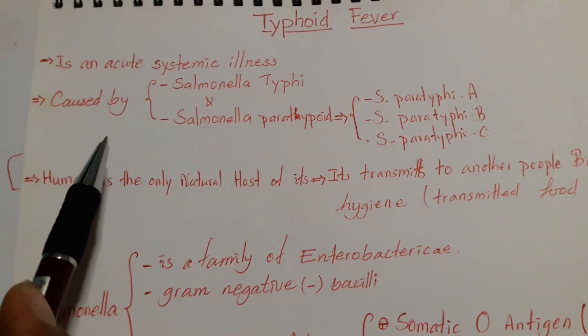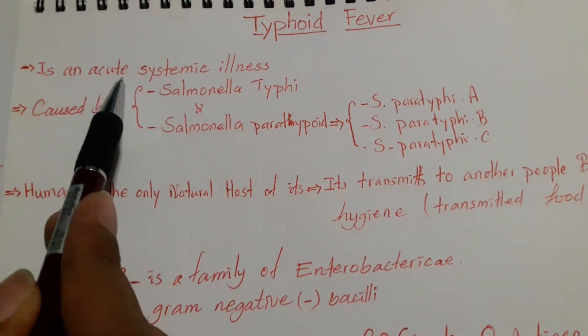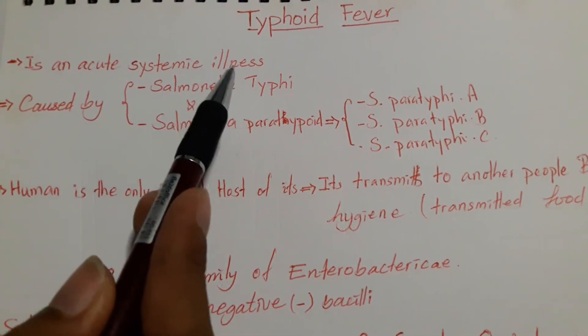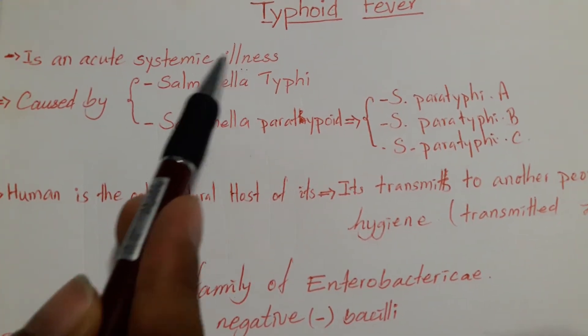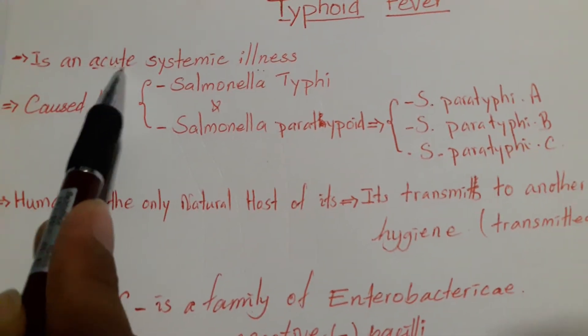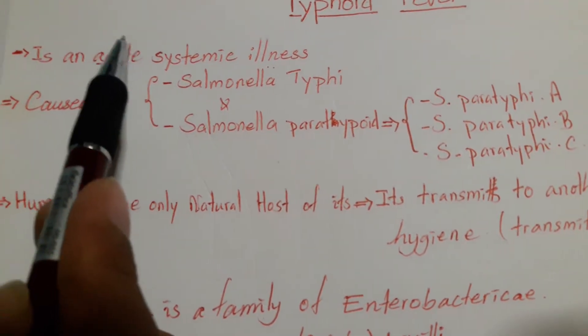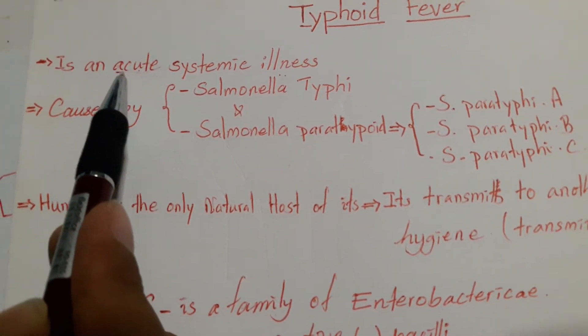Typhoid fever is an acute systemic illness. What does it mean? Acute means it is sudden and severe.